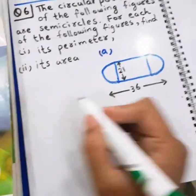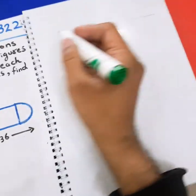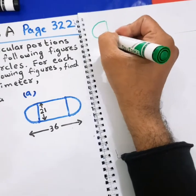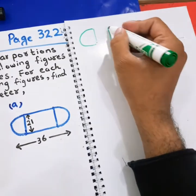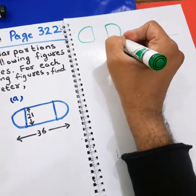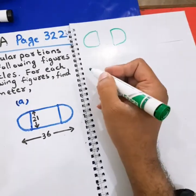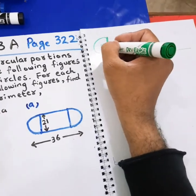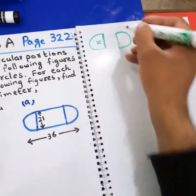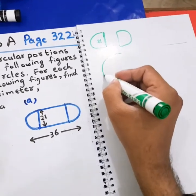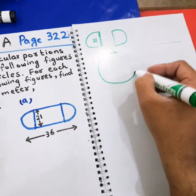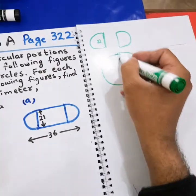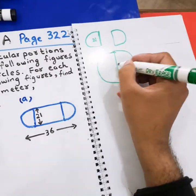The circular portions — this is one circular portion and this is also a circular portion. The diameter of the circular portion is given as 21. So if we join both of these portions together, it becomes a complete circle with diameter 21.